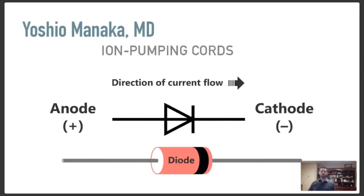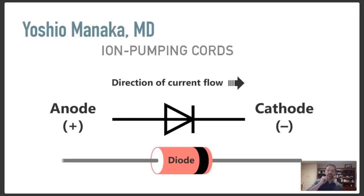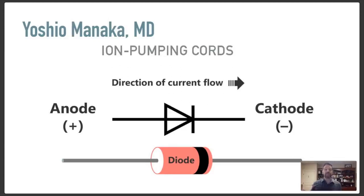So what is an ion pumping cord? Why does it work? What's the science behind it? It's really a simple device, actually. In order to make sure that electricity can flow one direction but not flow the other direction, you have a one-way valve — in this case, an electronic component called a diode. Diodes have an anode and a cathode, a positive and a negative side, and electricity will only flow in one direction from the anode to the cathode.